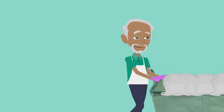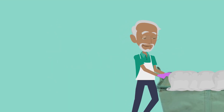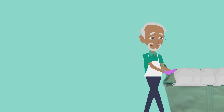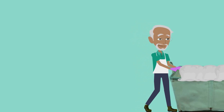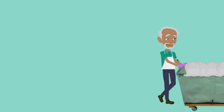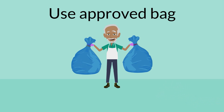Once the soiled items are contained in a secure bag, transport the bags to the laundry facility or designated holding area, either by using a laundry chute or by placing the laundry bags in a designated soil item handcart. Always place soiled items in the approved contaminated bag before sending them down the chute or placing them in the linen handcart.